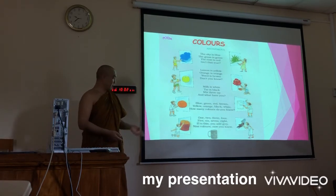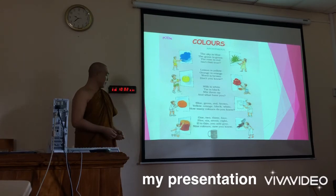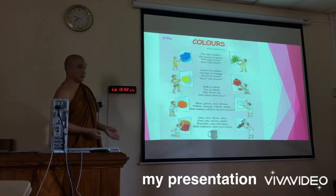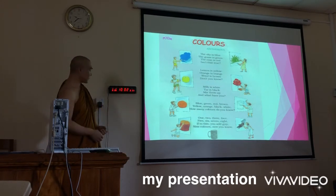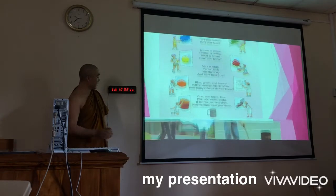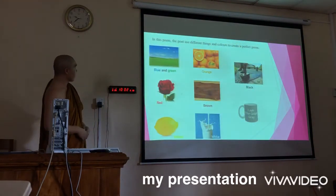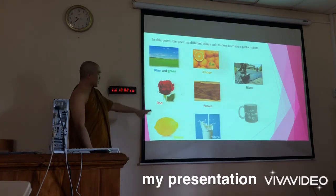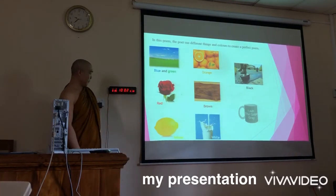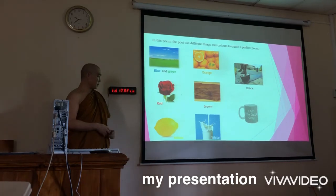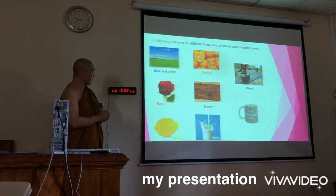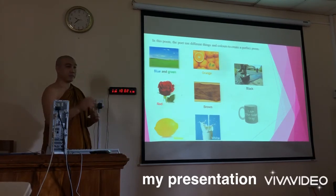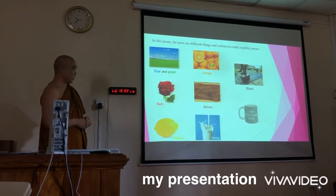And if you do this, you add gray. If you add gray, nine colors — now you know. This poem introduces us to nine colors. In this poem, the poet uses different things to show different colors, and also uses very simple things and simple words to create a perfect poem. This poem is simple and perfect.